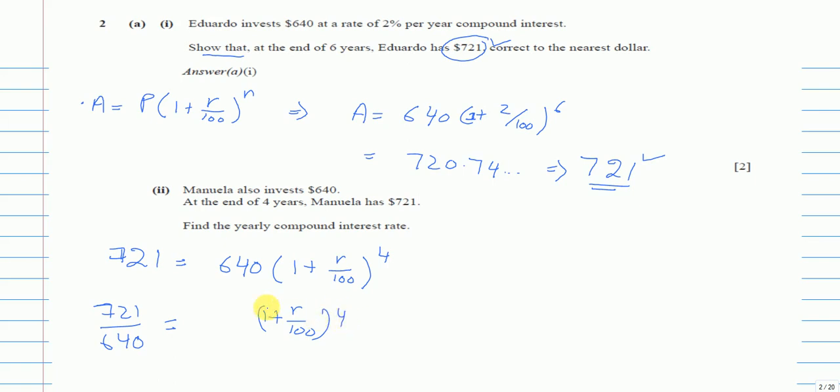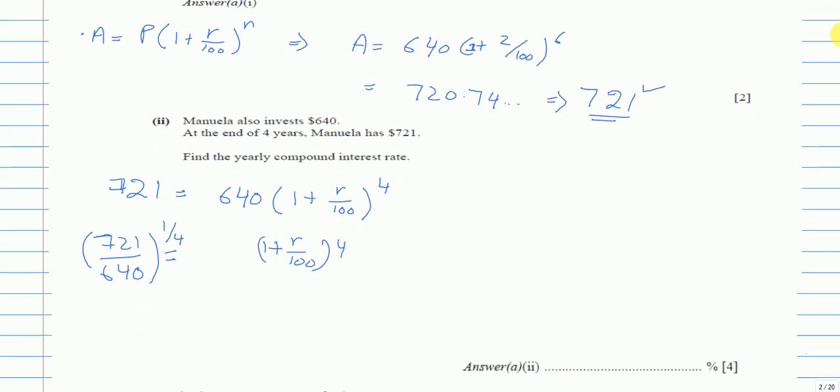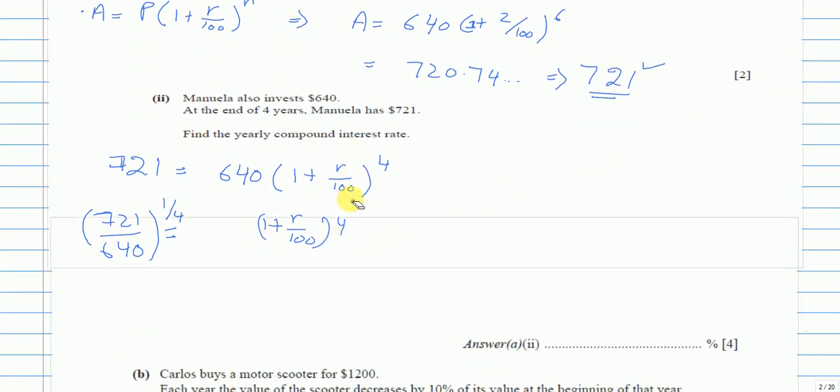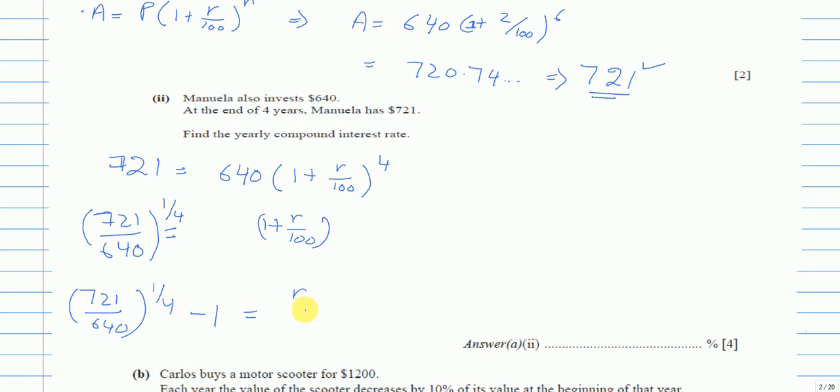So it becomes 721 over 640 to the power 1 over 4 equals 1 plus R over 100. And then the next step, now what we are going to do is open the bracket. So it will become 721 over 640 to the power 1 over 4. Now this is positive 1 on the right-hand side. On the left-hand side it will become minus 1 equals R over 100.